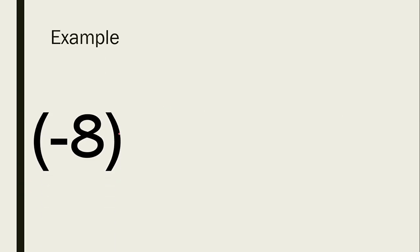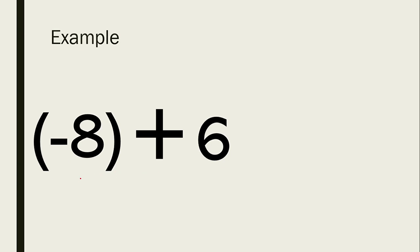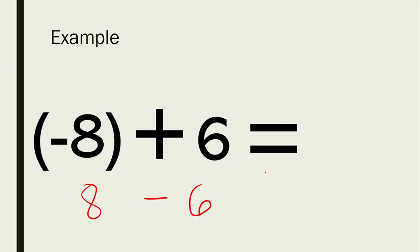Another example: negative 8 plus 6. Subtracting the absolute values of the two — the absolute value of negative 8 is always positive — so 8 minus 6 is 2. By looking at the given, the number with the greater absolute value is 8, and 8 is greater than 6. Therefore, we copy the sign of 8, which is negative. The sum is negative 2.